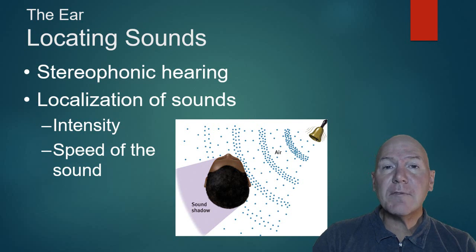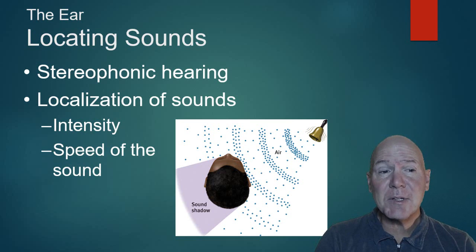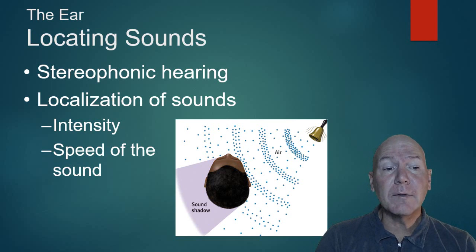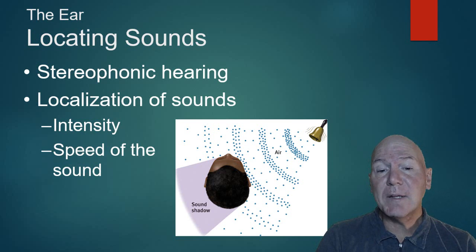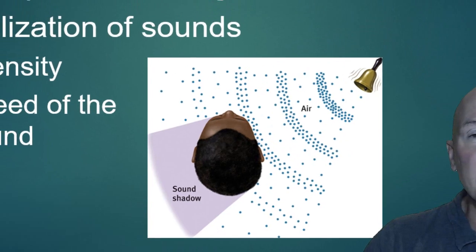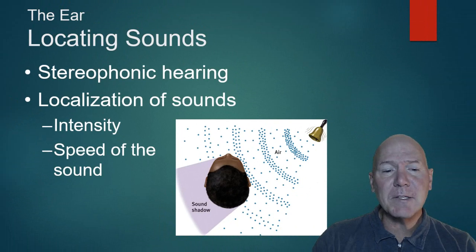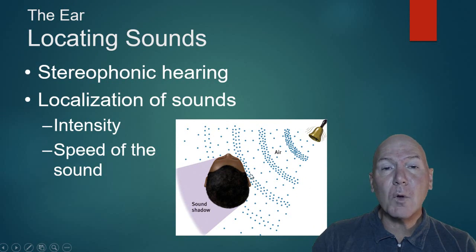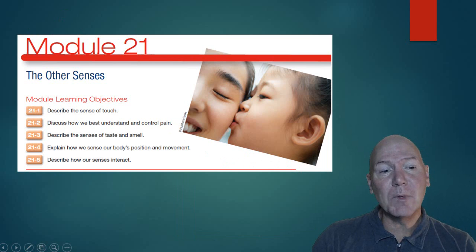We have stereophonic hearing because we have two ears, so we can locate sounds based on intensity or the speed of the sound — we basically create a sound shadow. Sound waves hit one ear before the other, and we can tell where the sound is coming from. Our brain is very adept at determining this, which is really important for survival. If you're in the forest and a predator is after you, hopefully you can hear it coming. Our brains can read very small differences in how quickly sound waves reach from one ear to the other.